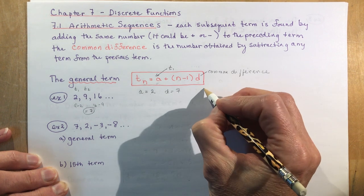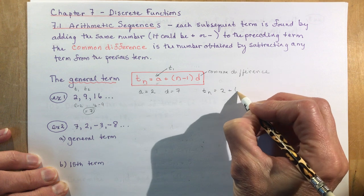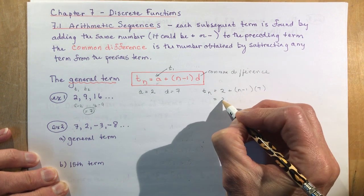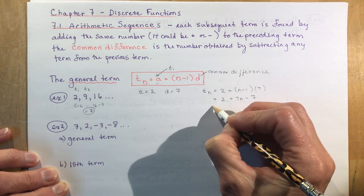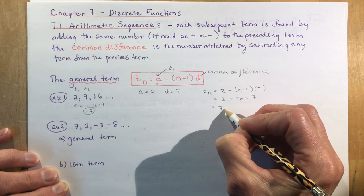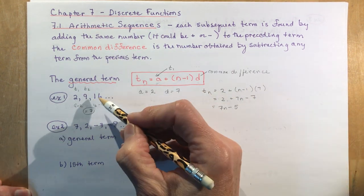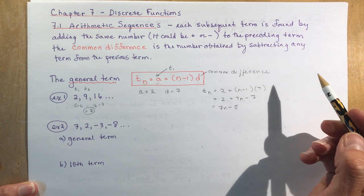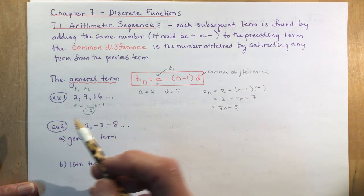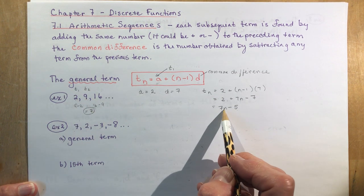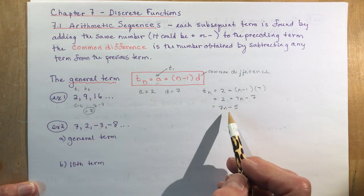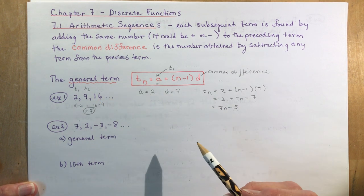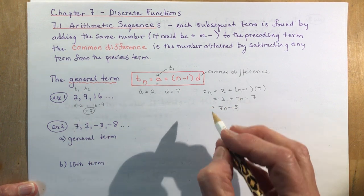Now all you have to do is plug that into the equation. The nth term is 2 + (n − 1) × 7. Expanding gives 7n − 7 + 2, so tn = 7n − 5. You can verify: first term is 7(1) − 5 = 2 ✓, second term is 14 − 5 = 9 ✓, third term is 21 − 5 = 16 ✓. You can find any term in your sequence using this general term.